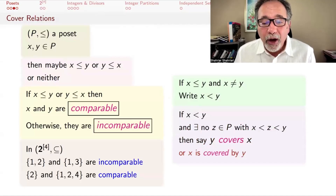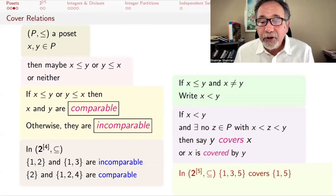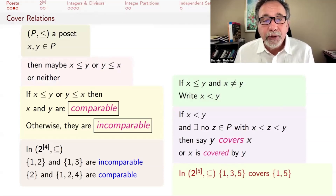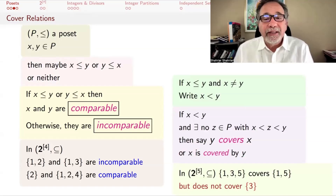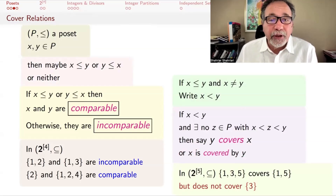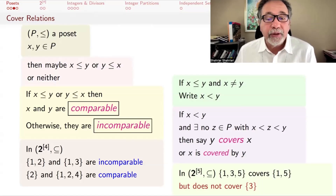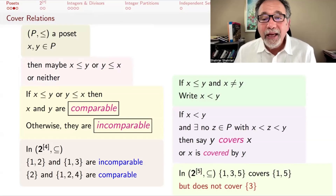In the Boolean lattice of order 5, {1,3,5} covers {1,5} because {1,5} ⊆ {1,3,5} and there's no subset between them. But {1,3,5} does not cover {3}, because even though {3} ⊆ {1,3,5}, there are subsets like {1,3} and {3,5} that lie between them.